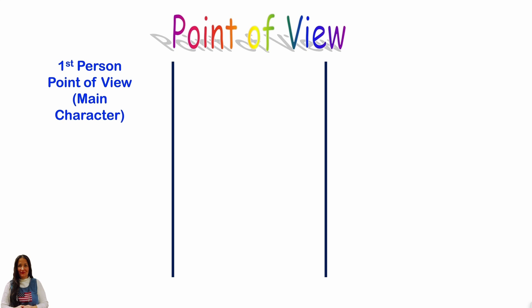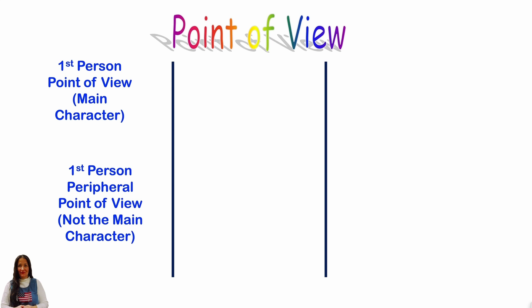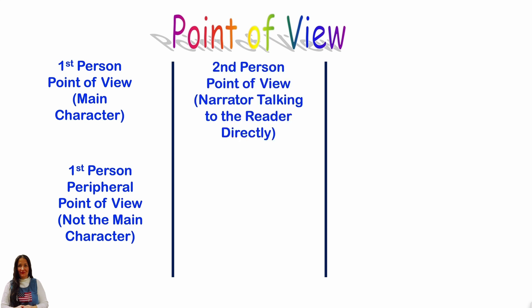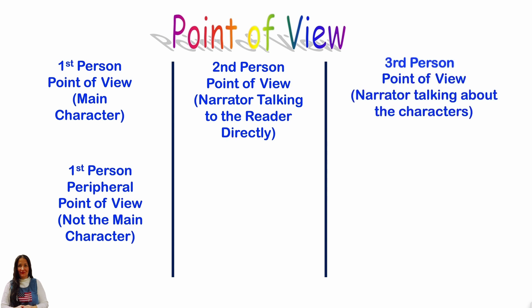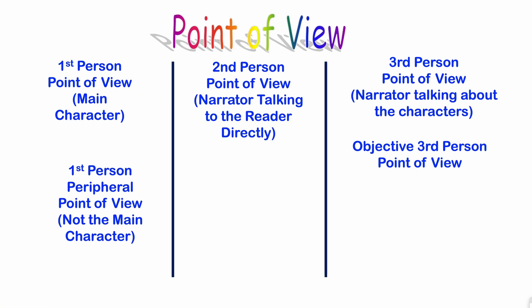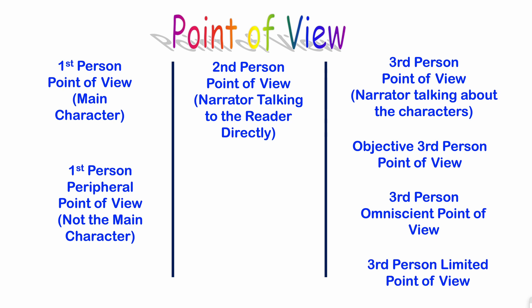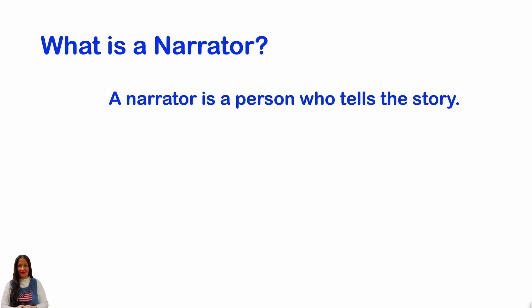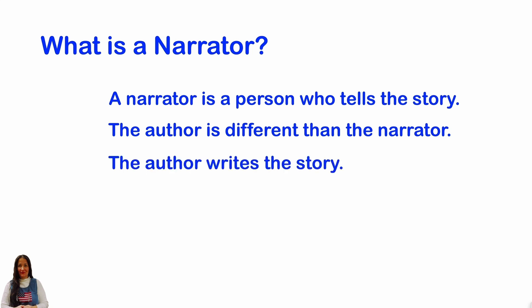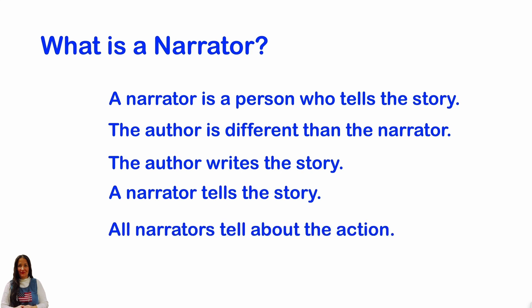First person point of view: the main character. First person peripheral point of view: not the main character. Second person point of view: the narrator is talking to the reader directly. Third person point of view: narrator talking about the characters. Objective third person, third person omniscient, and third person limited point of view — we're going to be learning about each of these. This will improve your writing because you have to determine how you're going to write your story and whose perspective you're going to write it from. A narrator is a person who tells the story. The author is different from the narrator — the author writes the story, the narrator tells the story. All narrators tell about the action.